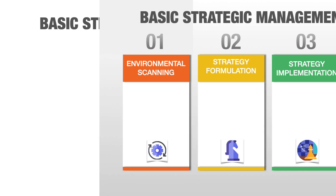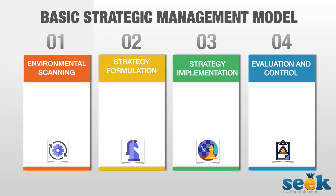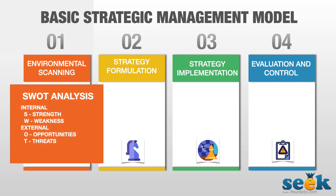Here are the four main elements of the strategic management model. The first one is environmental scanning. This is again divided into two categories, one internal and the other external. It is synonymous with the most popular term SWOT analysis, which is strength, weakness, opportunities, and threats analysis.